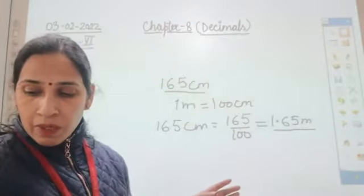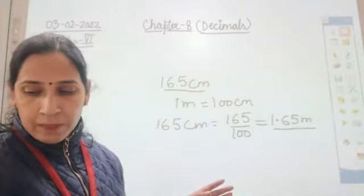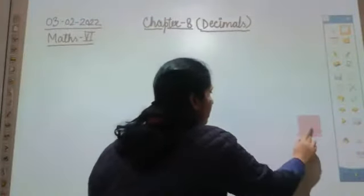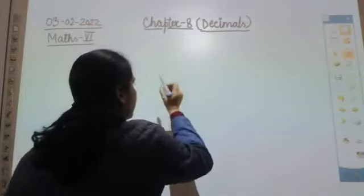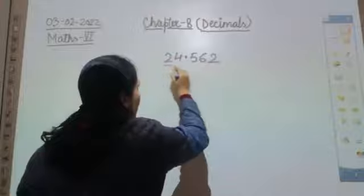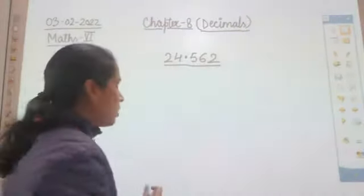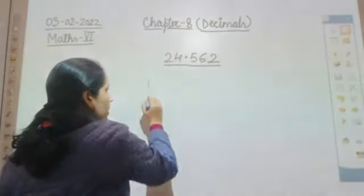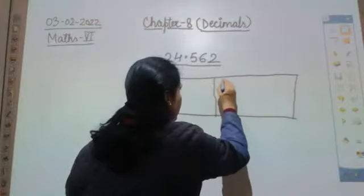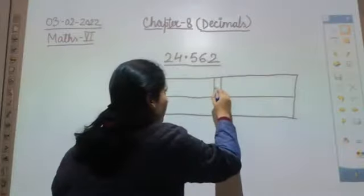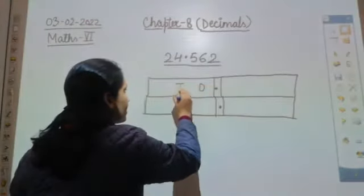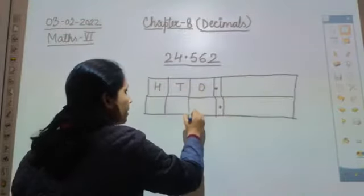So let us see what will be the place value. In the place value chart for decimals, the numbers before the decimal point have the same values as before - ones, tens, hundreds, thousands, ten thousands, lakhs, ten lakhs, crores, ten crores and so on. But after the decimal point, we will have tenths, hundredths, thousandths and so on.